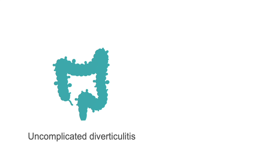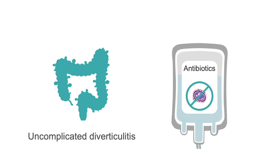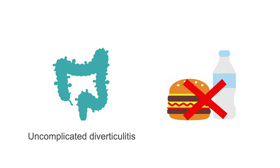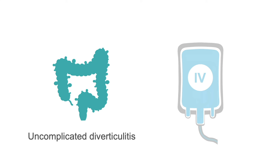The management of uncomplicated diverticulitis is initially medical. It involves administration of intravenous antibiotics, converted to oral antibiotics once an oral diet is tolerated. The antibiotics should cover gram-negative rods and anaerobic organisms. Management should also include bowel rest with nothing given per mouth, and intravenous fluid resuscitation, as these patients can be greatly dehydrated.